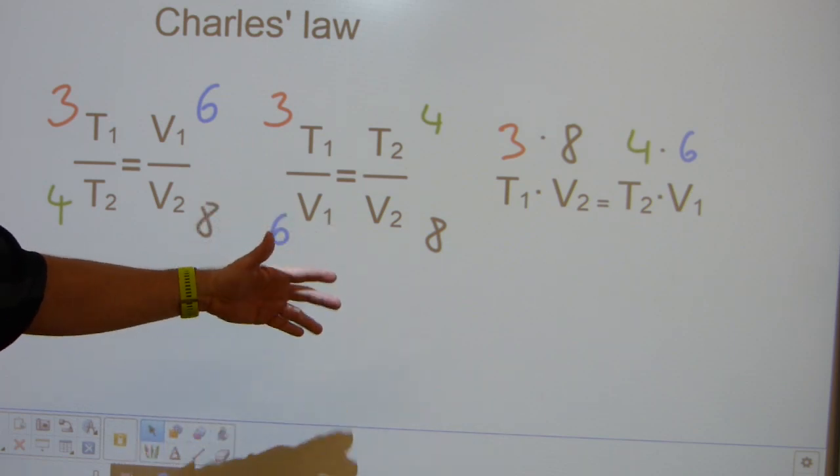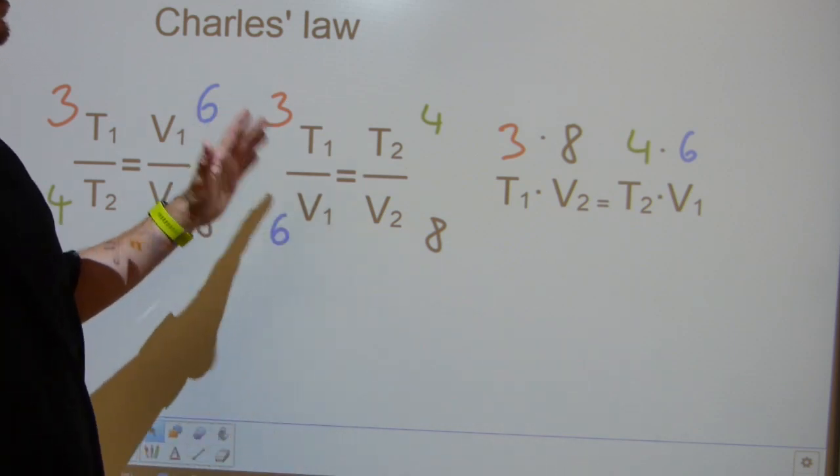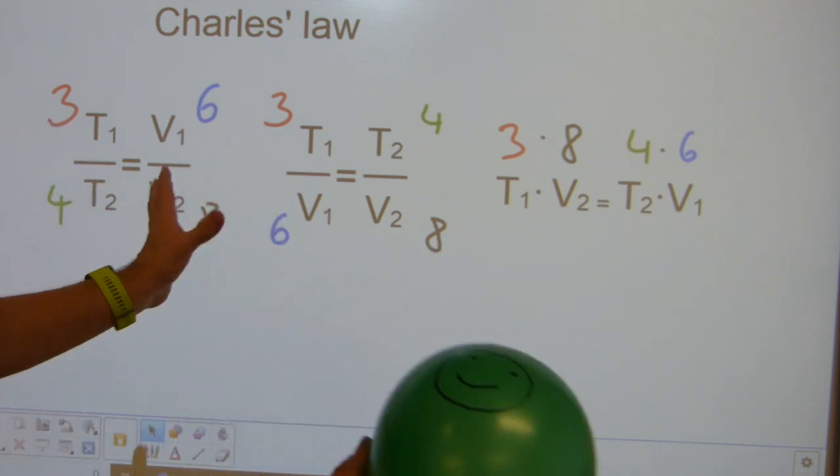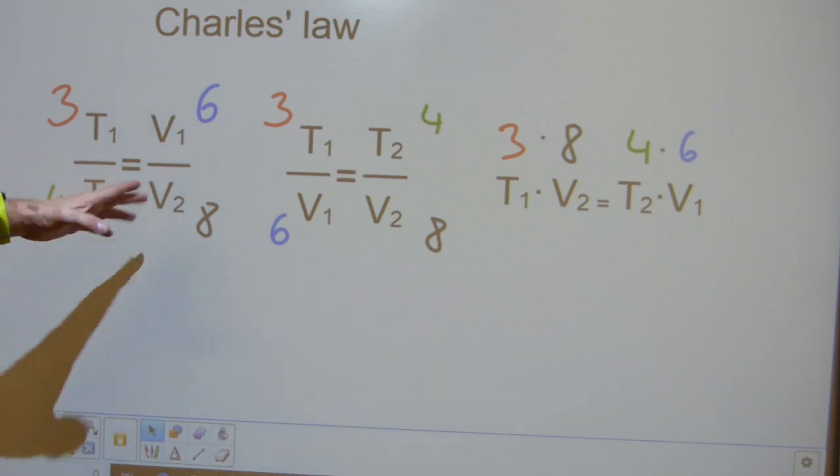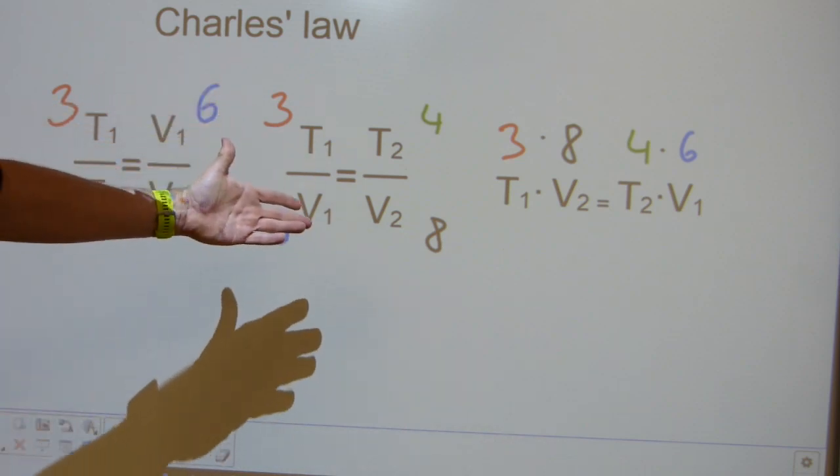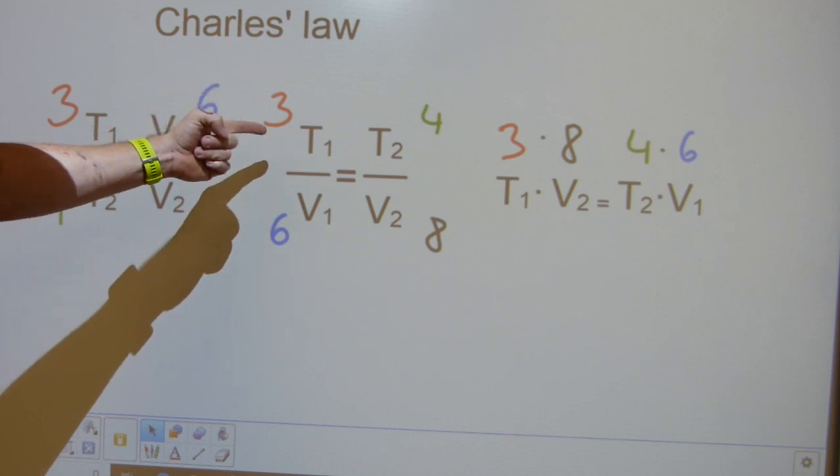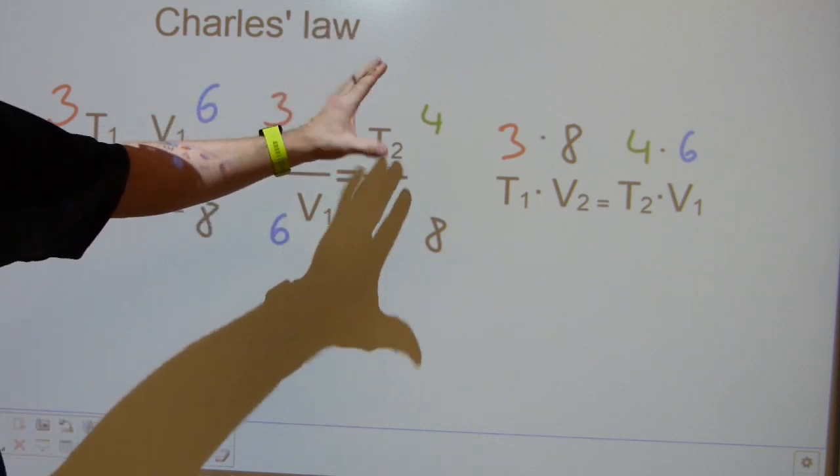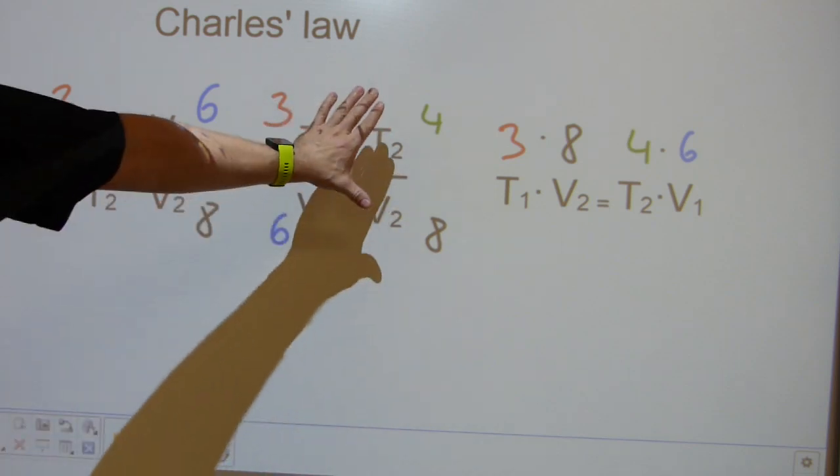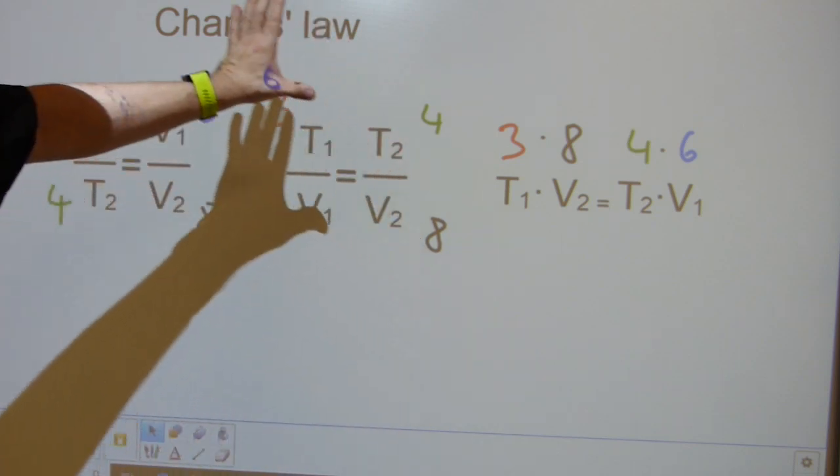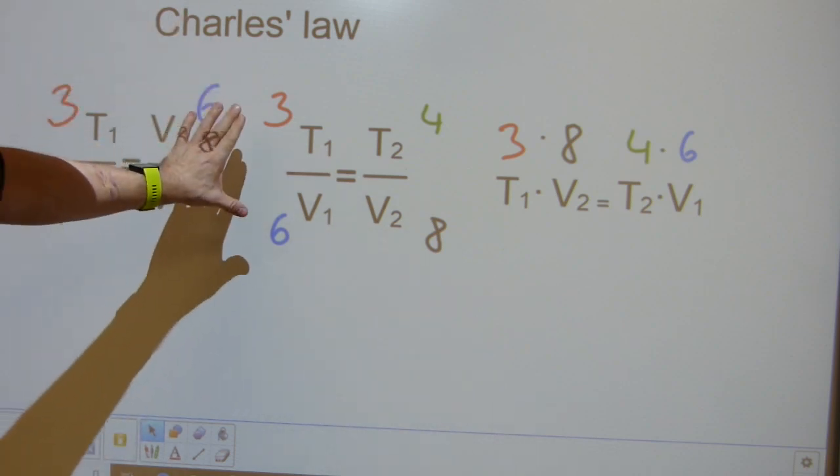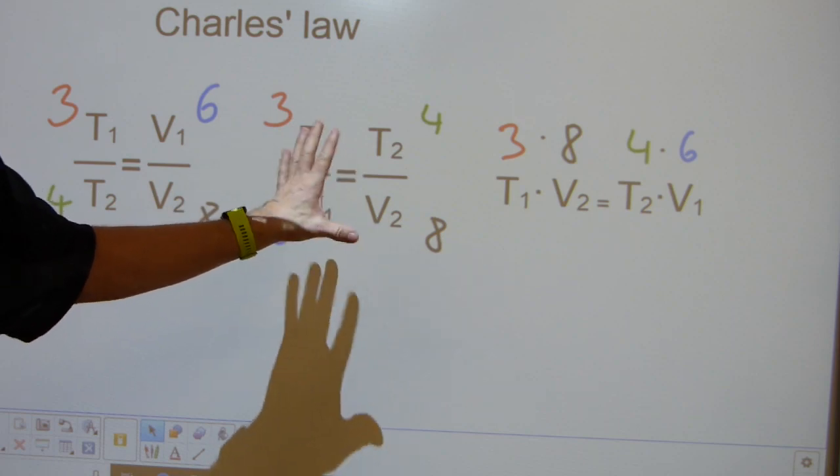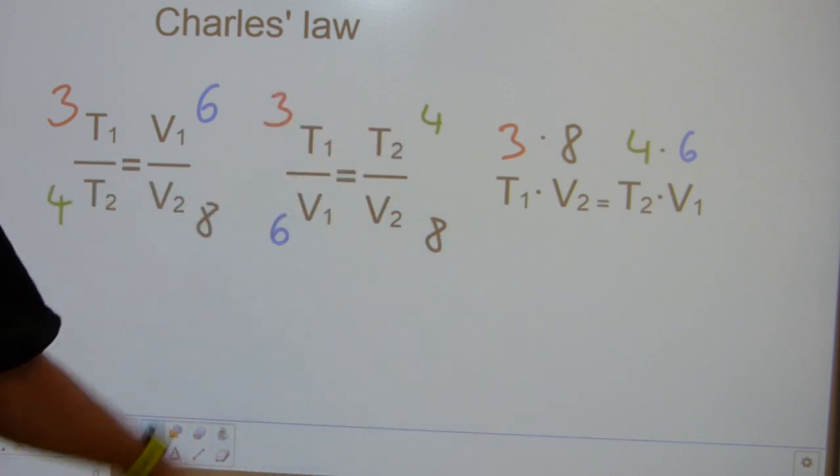Let's call T1 equals 3, T2 will be 4, so the temperature goes up by 1. And volume, the first volume is 6, and it goes up to 8. So let's look at it as equivalent fractions. The equivalent fraction 3 over 6 is the same as 4 over 8. They both can reduce to lowest terms, 1 over 2. So these are equivalent fractions.